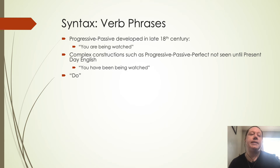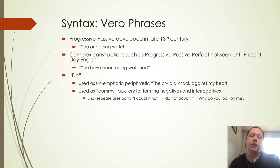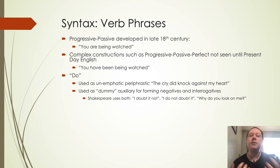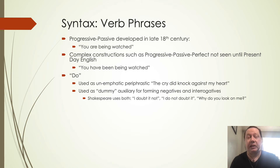The use of 'do' as a dummy word starts to become common — it can be used as a periphrastic form or to add emphasis, so 'the cry did knock against my heart' rather than 'the cry knocked,' or as a dummy auxiliary for forming negatives or questions. You could hear 'I doubt it not' or 'I do not doubt it' in Shakespeare — both seen during Shakespeare's time. It's starting to emerge but not used as consistently yet, whereas we use it very frequently in present-day English to create negatives and questions.